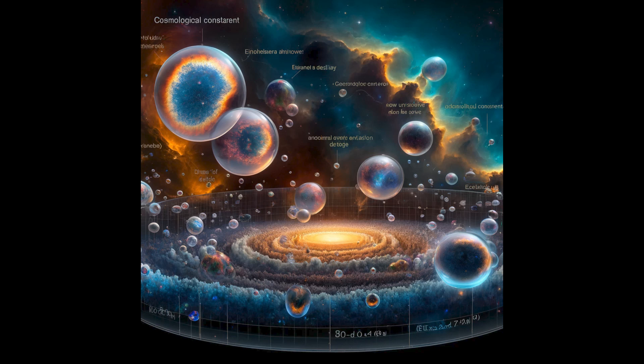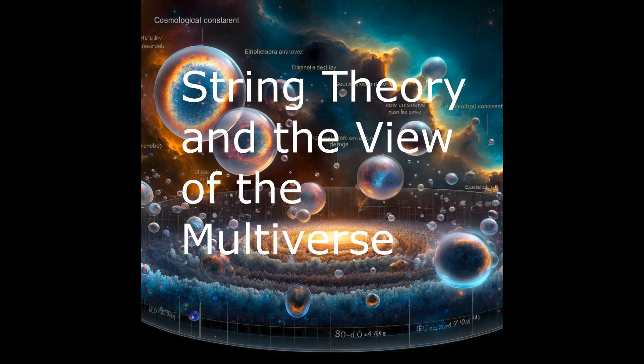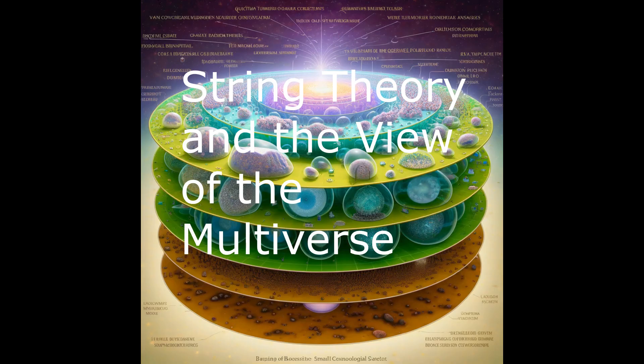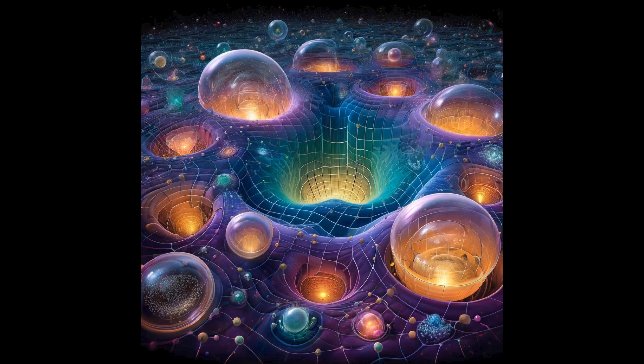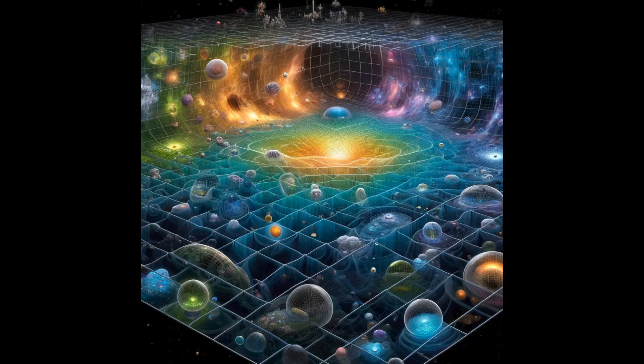String theory and the view of the multiverse. String theory, inherently formulated in nine or ten spatial dimensions, proposes a multitude of ways to condense these extra dimensions, leading to a multitude of possible three-dimensional spaces. Each of these gaps corresponds to a local minimum in the potential landscape and can have different values of the cosmological constant.